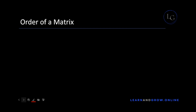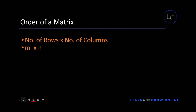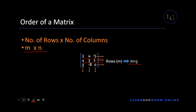Now let's see what the order of the matrix is and how to find it. The number of rows and the number of columns in the matrix is the order of a matrix. M by N is a way to write the order of a matrix. In this example we will first see how many rows are in this matrix — as you can see we have three rows, and then we will see how many columns we have, which is also three. So we will say that the order of this matrix is three by three.